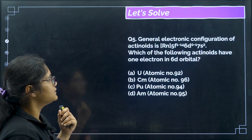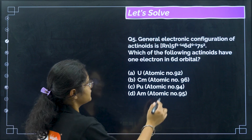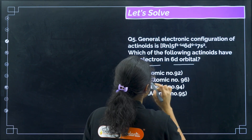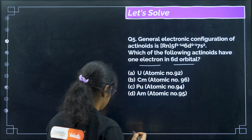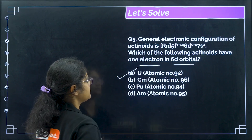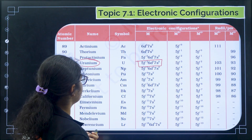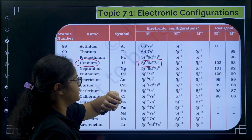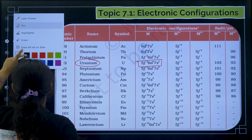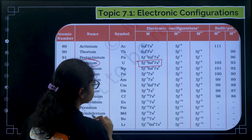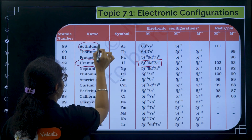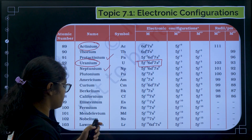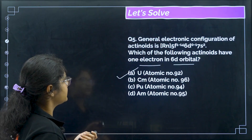Practice question — which actinoid elements have one electron in the 6D orbital? Looking at the electronic configurations, uranium has 5f³ 6d¹ 7s², so it has one electron in 6D. There are four elements with one 6D electron: actinium, protactinium, uranium, and neptunium. Here the answer is uranium.